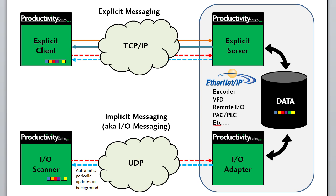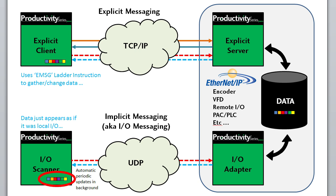And it's so easy with the Productivity Suite software — you just fill in a few blanks and you're up and running. With explicit messaging, there's a single ladder instruction that does the work, and with implicit, you just set it up in the hardware configuration and forget about it. The data is automatically transferred in the background and just appears on your local controller as if it was local I/O, ready for you to use. Easy.